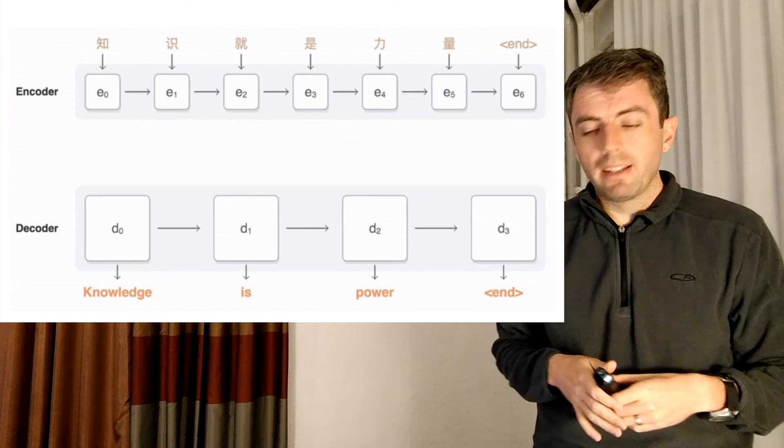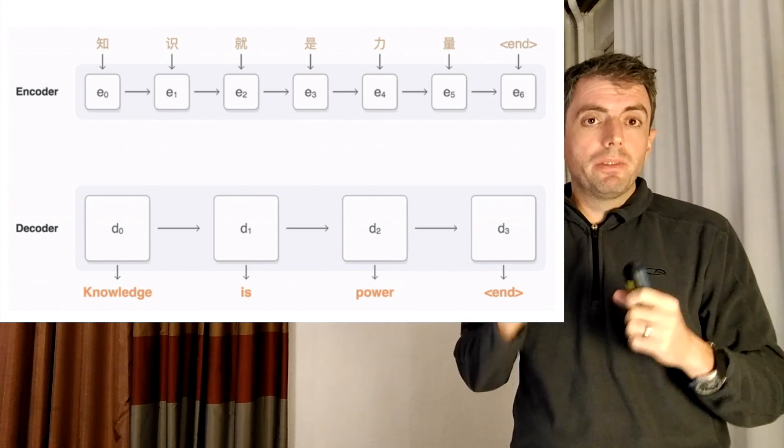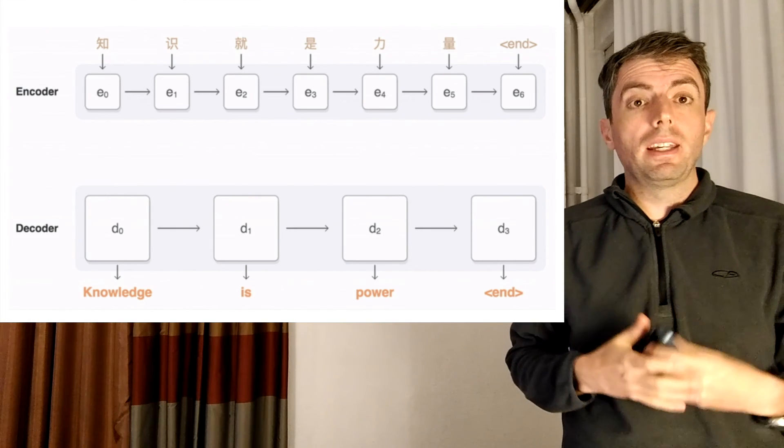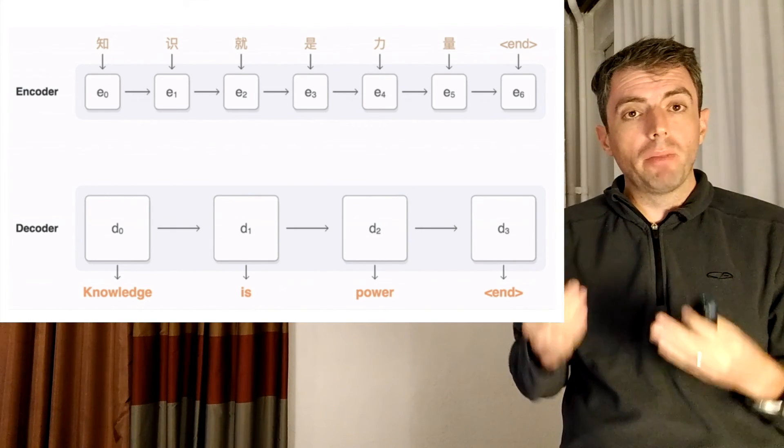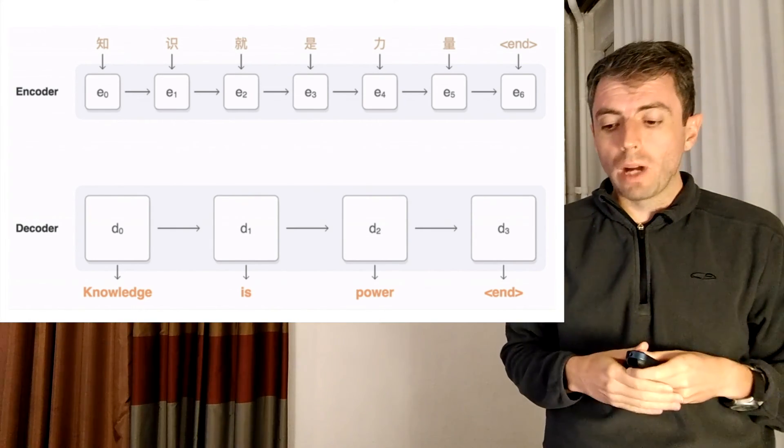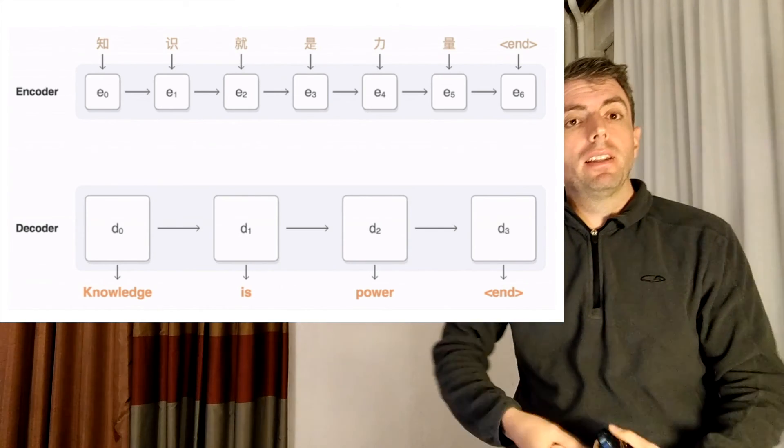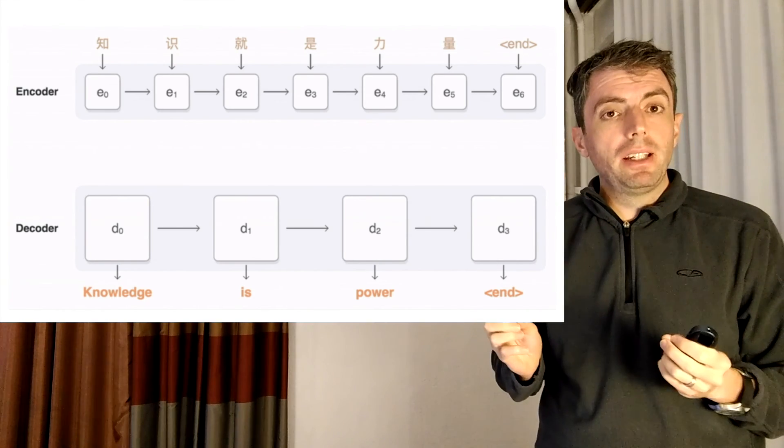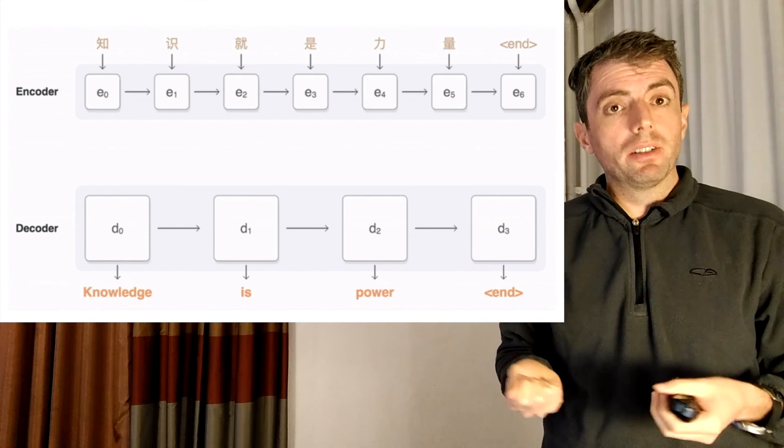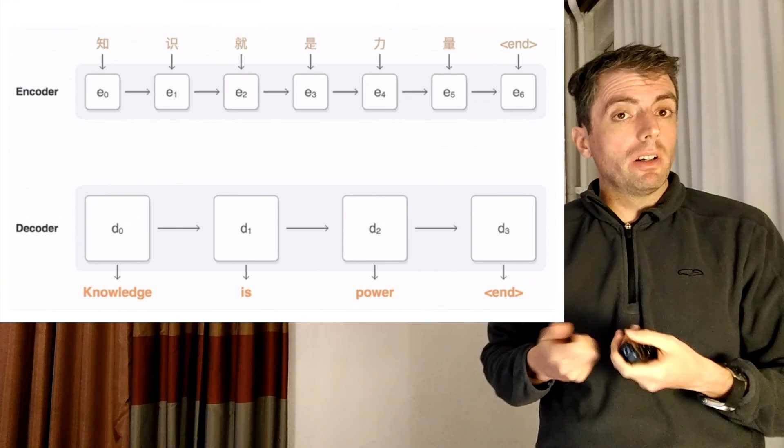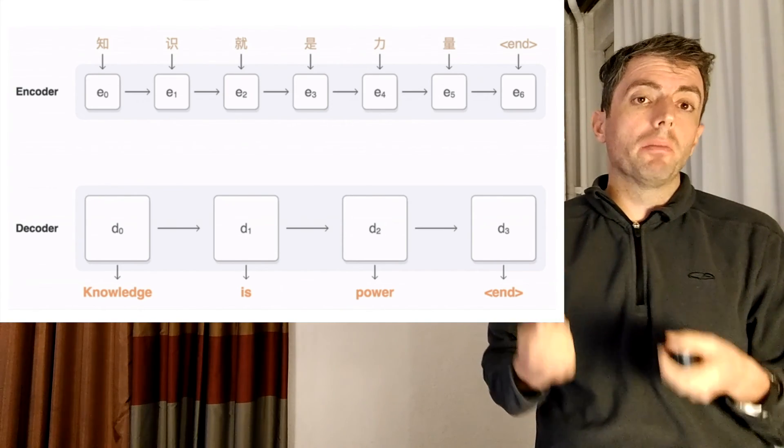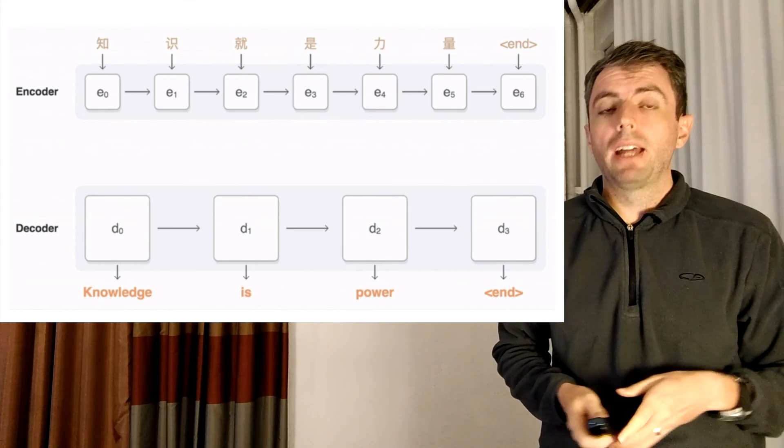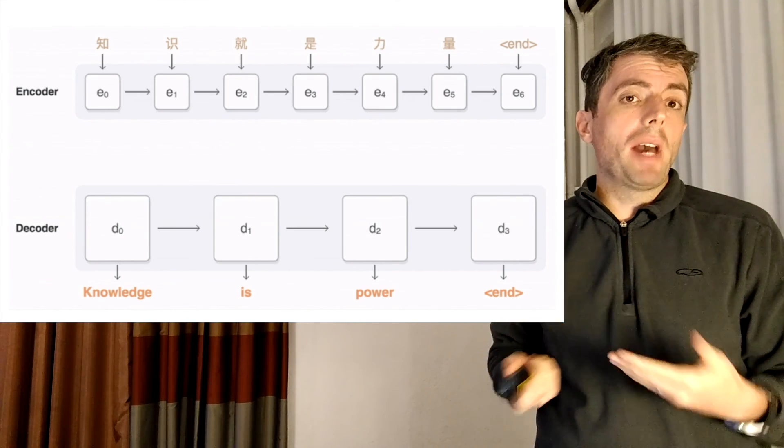And so attention is a powerful mechanism that allows you to figure out when you're translating one word in the target language, which words in the source language are important for making sure that you get that translation right. And this is typically implemented by having a probability distribution over the input characters. And you learn which patterns of attention are most effective for giving you the correct downstream prediction. And you train it, as before, with backpropagation.